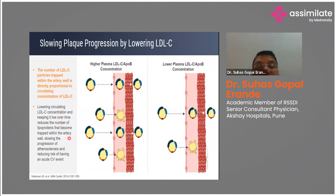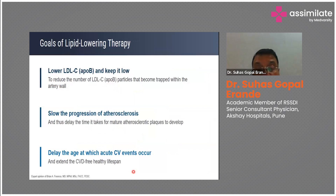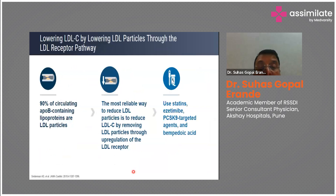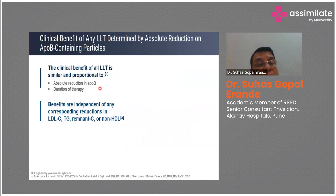The strategy is to lower LDL or ApoB and keep it low to reduce the number of ApoB-containing particles trapped in the arterial wall, slow the progression of atherosclerosis, and delay the age at which acute cardiovascular events occur. To achieve this, use statins, ezetimibe, PCSK9-targeted agents, or bempedoic acid to reduce LDL and thereby reduce ASCVD. The clinical benefit of all lipid-lowering therapies is similar and proportional to the absolute reduction in ApoB and the duration of therapy.